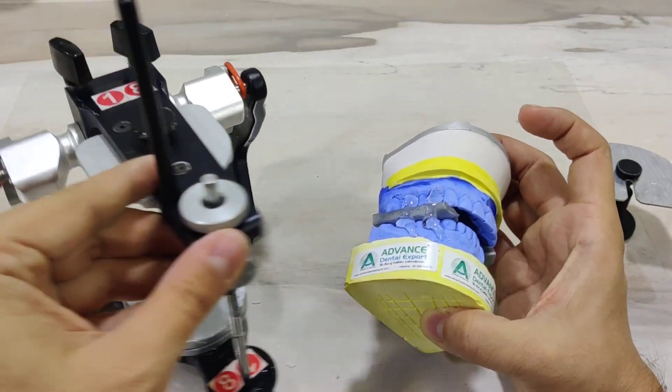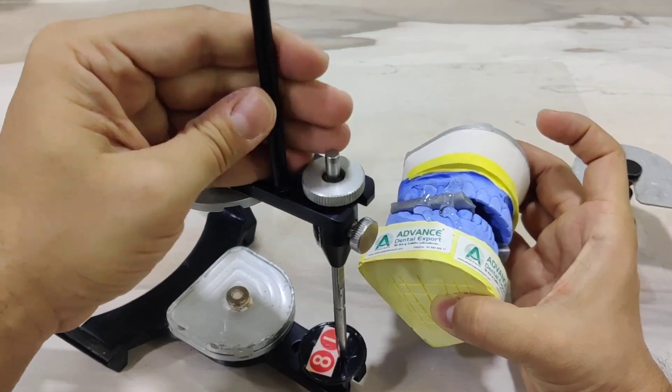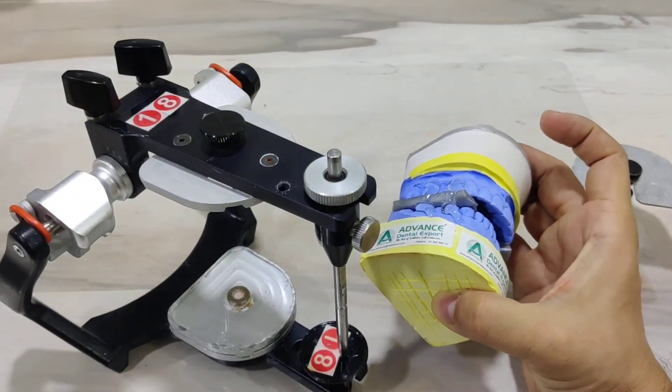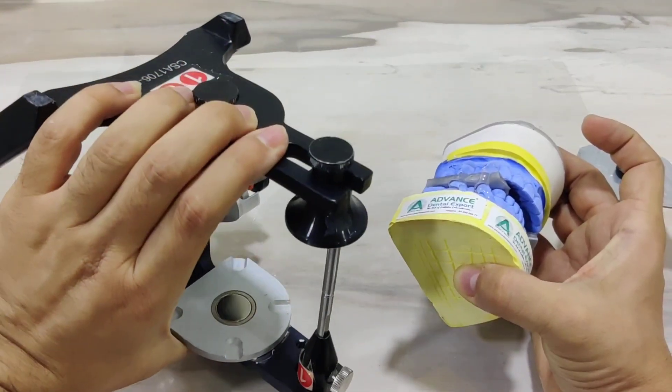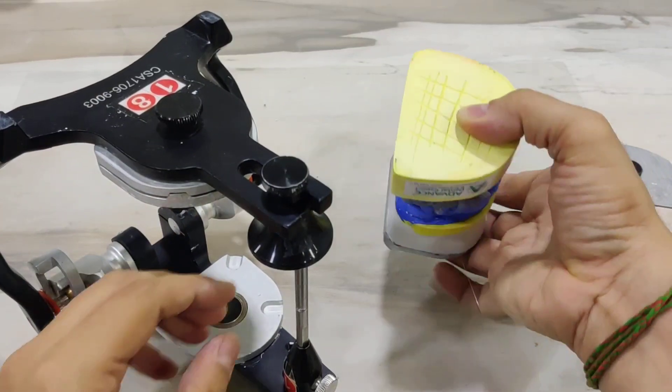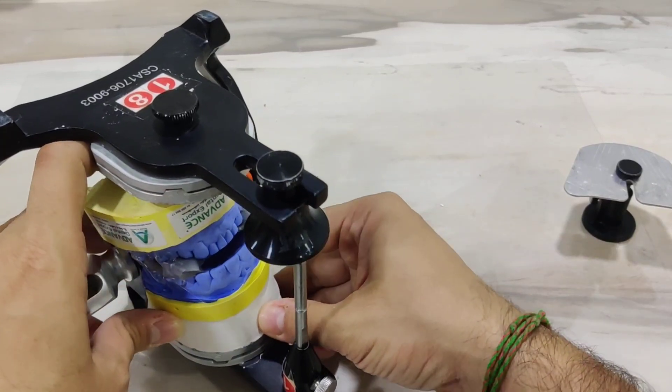Remember, whenever you are mounting the mandibular cast, it's important to remove this off. When we are mounting the mandibular cast, the mounting is actually done by completely tipping the articulator over onto its head. My articulator is kept upside down, which means this will now be my maxillary side. This is how it goes and sits in.